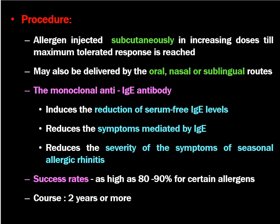The monoclonal anti-IgE antibody produced with the help of immunotherapy induces a reduction of serum-free IgE levels, leading to fewer reactions, reduces symptoms mediated by IgE immunoglobulin, and reduces the severity of symptoms of seasonal allergic rhinitis. Success rates of allergen-specific immunotherapy are 80 to 90 percent for certain allergens, but may not be good for all. The problem with this procedure is that the course is longer — it takes around two years or more for the patient to come to the clinic and get injected. Sometimes anaphylaxis may occur during injections, so everything has to be made ready for control of anaphylaxis.